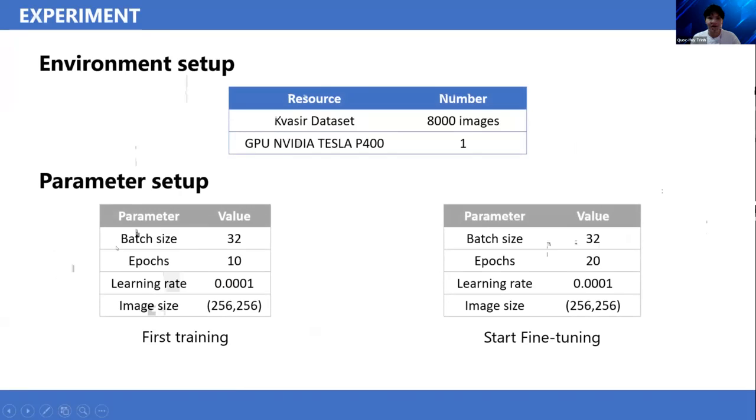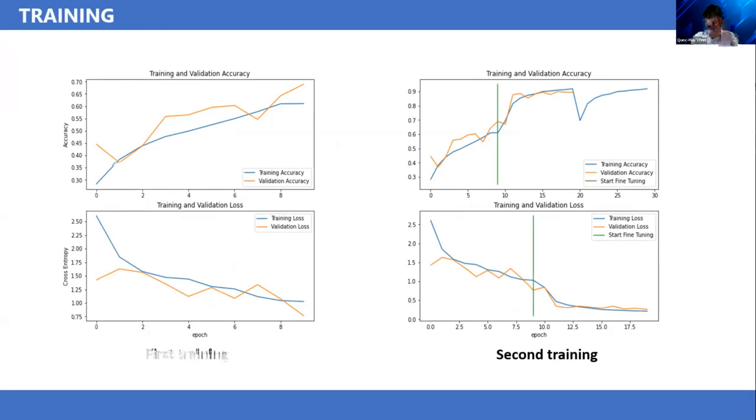This is our setup for our environment. We do the experiment on the Kervasi dataset with 8,000 images and test on GPU NVIDIA Tesla P100. We set the initial training with batch size 32, 10 epochs, and learning rate 0.001. The image size is 256. After the first training, we fine-tune the model to get the output. This is the loss, validation loss, and validation accuracy in our training process. We get competitive scores in the two processes with more than 90%.